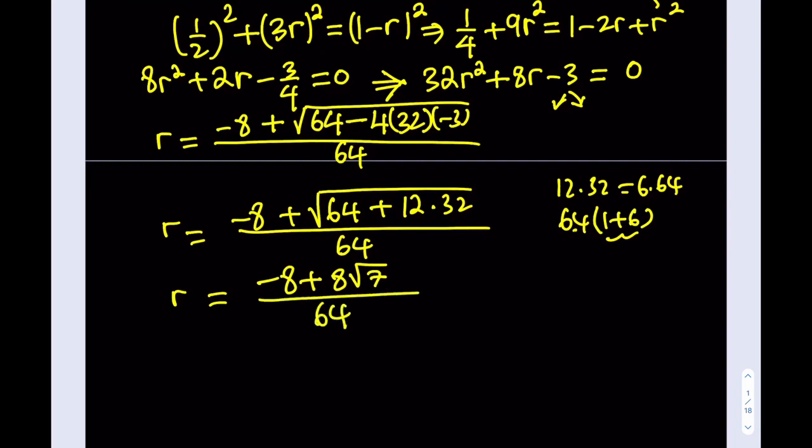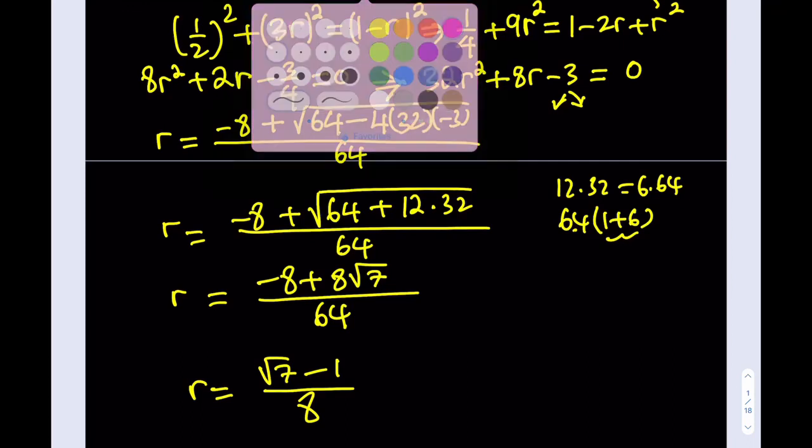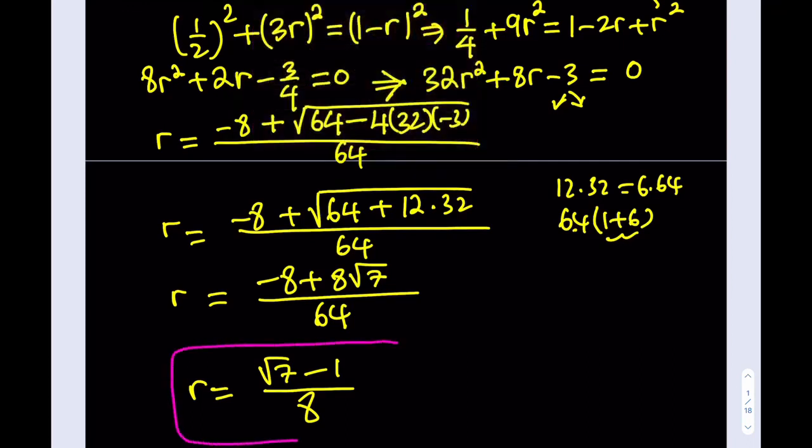Now, what I can do at this point is divide everything by 8 and write it in a nicer way. So it's going to look like r equals square root of 7 minus 1 divided by 8. So that should be my solution for this problem. The radius, there's only one positive value, so that should be it.